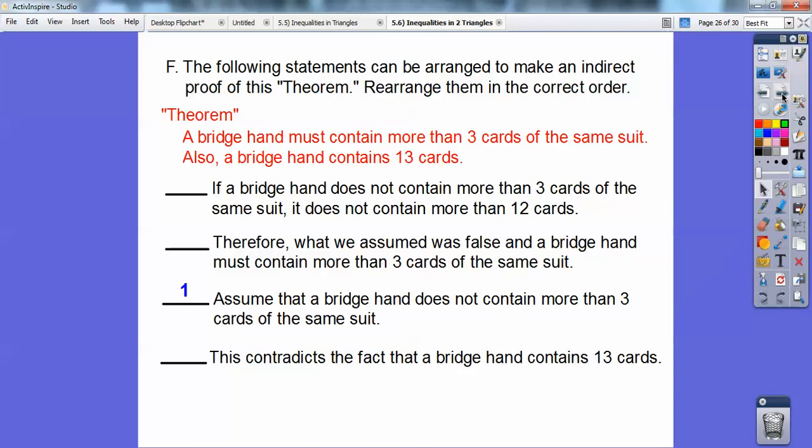Assume that a bridge hand does not contain more than three cards of the same suit. Is there any one of these that picks up with does not contain more than three cards of the same suit? Yes, this one right here. If a bridge hand does not contain more than three cards of the same suit, it does not contain more than 12 cards. So this must be my second one right here because it follows right after this one.